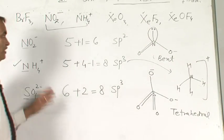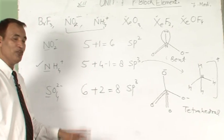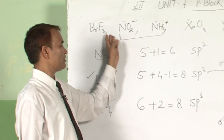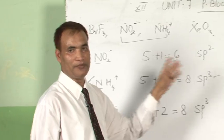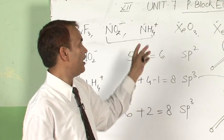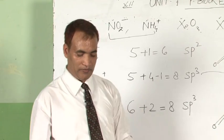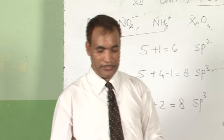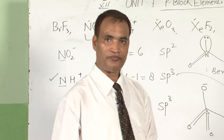So in this way, I think now you will be able to solve these, if you have the basic idea of VSEPR theory and the position of the central atom in the periodic table. I assure you, you can get the answer within 10 seconds.